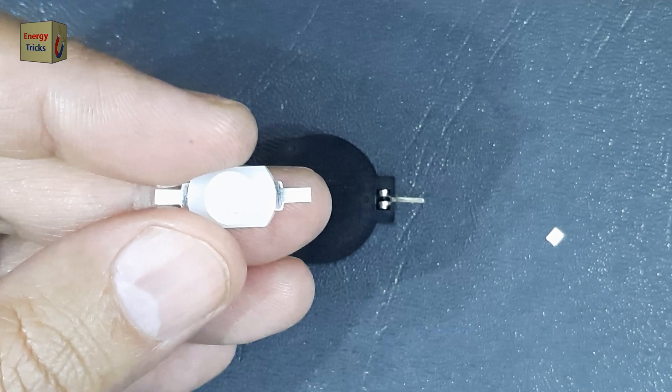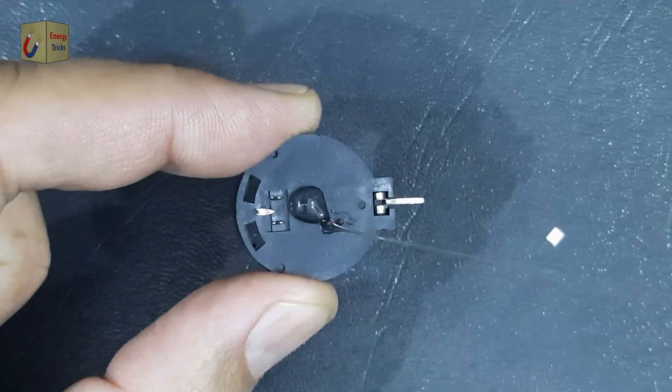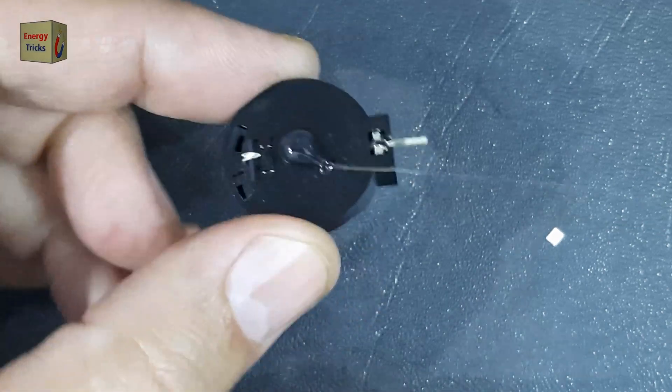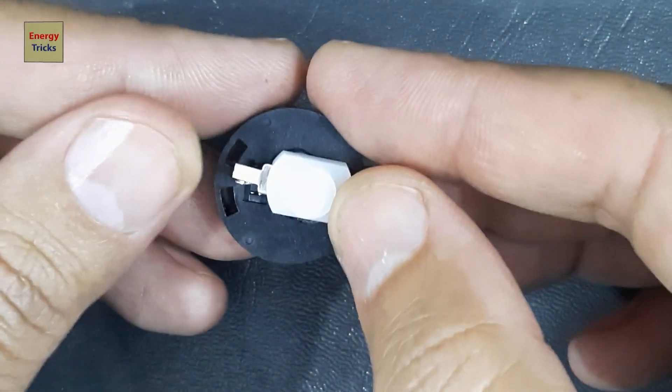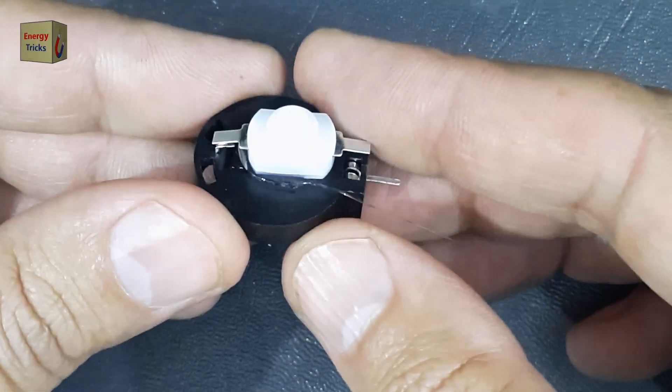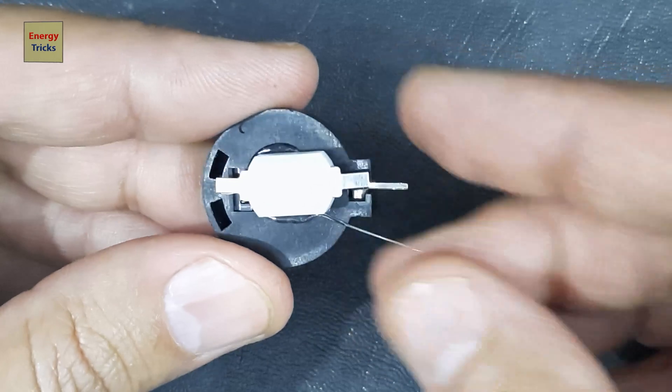Next, I will carefully attach the small switch to the battery holder using a hot glue gun. The hot glue will provide a strong and durable bond, ensuring that the switch remains securely in place during use. Positioning the switch correctly is essential to maintain a neat, compact design for our mini torch, while also ensuring functionality.